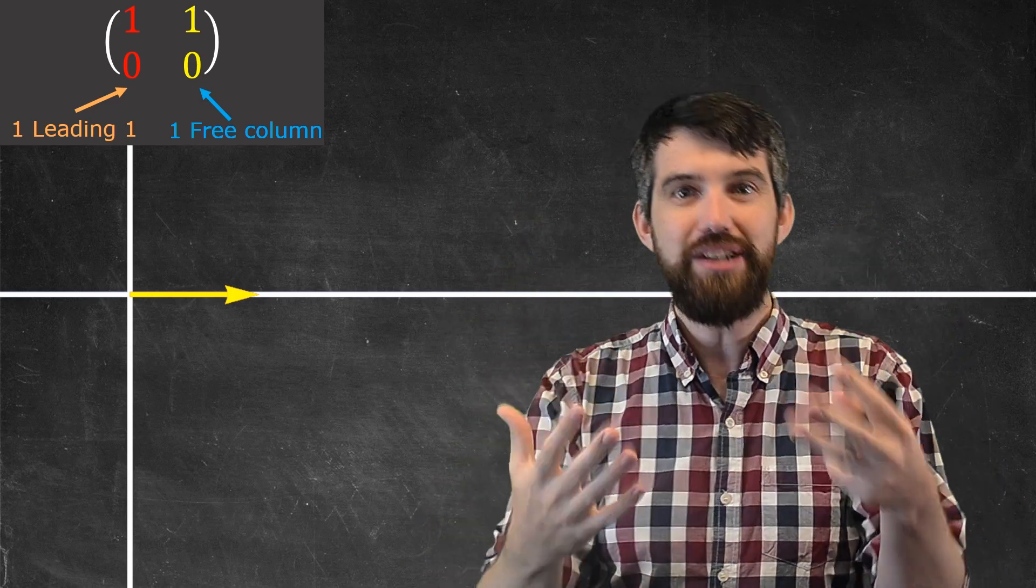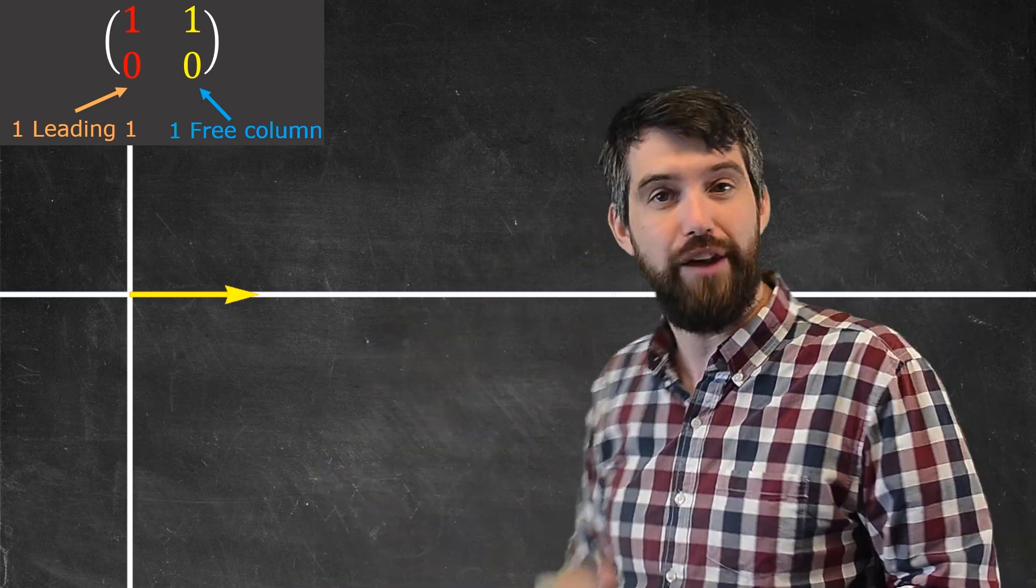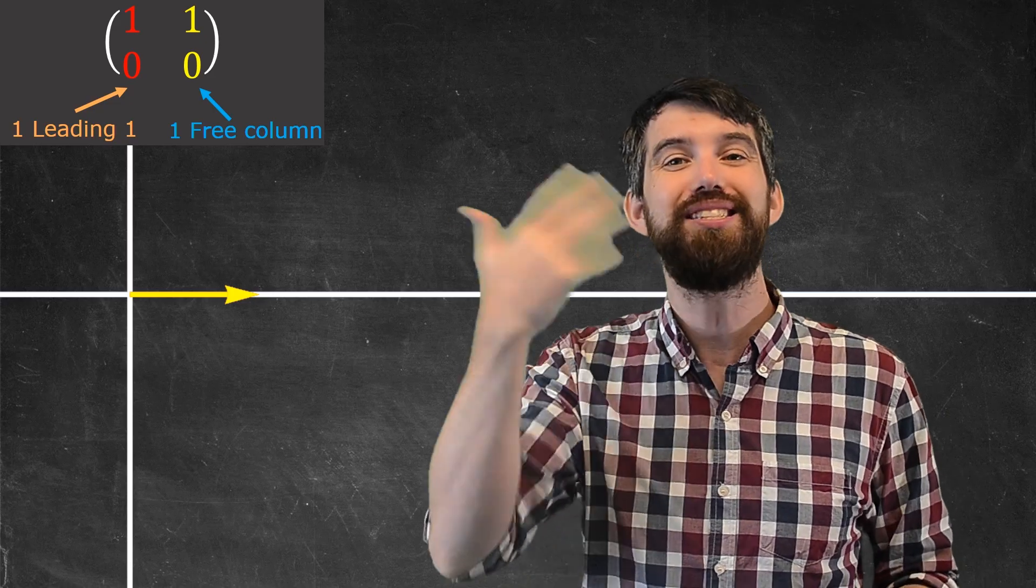So in other words, its dimension of its column space, its dimension of its null space, they're both 1, and then they add up to 2, which is the n for this particular matrix. So let's try to see how that's going to work.